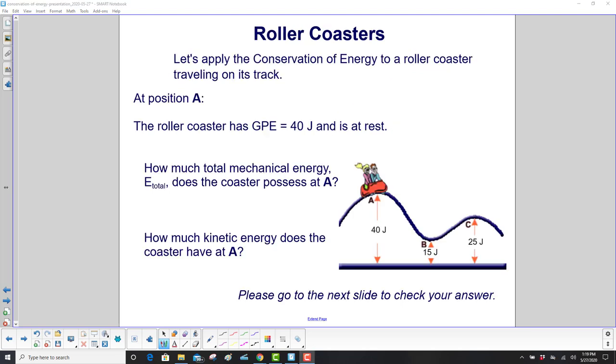Let's apply the conservation of energy to a roller coaster traveling on its track, because after all, that is the unit name. We're talking about roller coasters. At position A, and that's over here, the roller coaster has 40 joules of gravitational potential energy, and it's at rest. It's not moving.